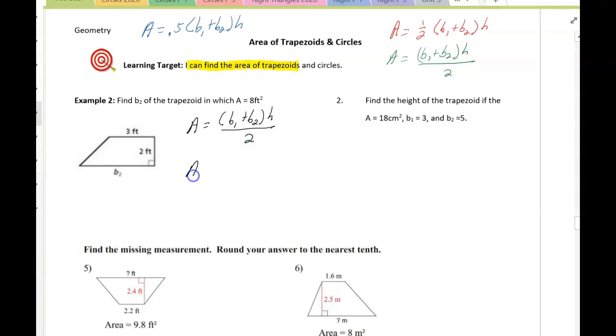If you look at the problem on the left, we can see that the first base is 3. We don't know the second base, I'll leave that as a variable. The height is 2, and then we're going to divide this by 2. In the paragraph it tells us the area is 8 square feet. So the area is 8 feet squared. So 8 is equal to 3 plus b2 times 2 divided by 2.